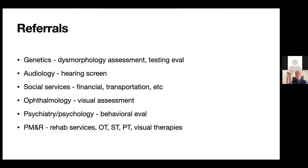There are often socioeconomic concerns — financial issues, insurance, transportation, getting on to waivers — and social services are very helpful there. If we have concerns for visual issues or motor planning, we'll have ophthalmology assess the patient. There are often significant neuropsychiatric associations, so we involve psychology colleagues, as well as PM&R and orthopedics if children need rehab services such as OT, ST, PT, visual therapies, or feeding therapies.